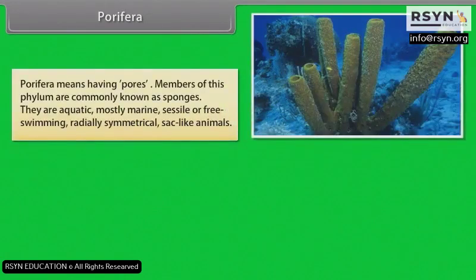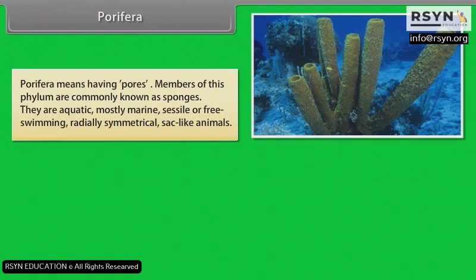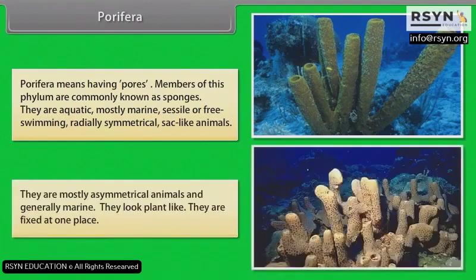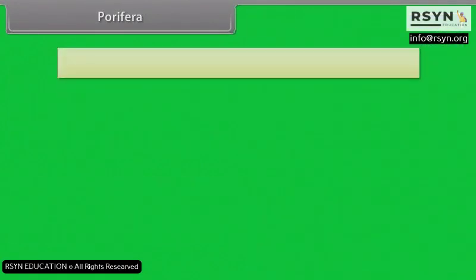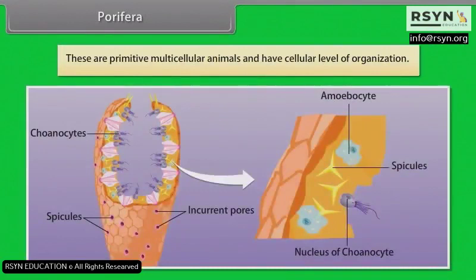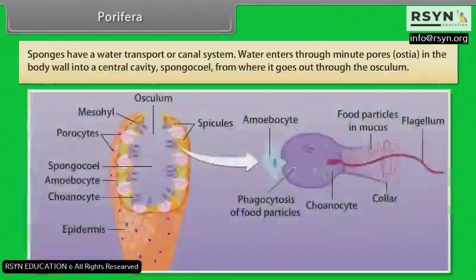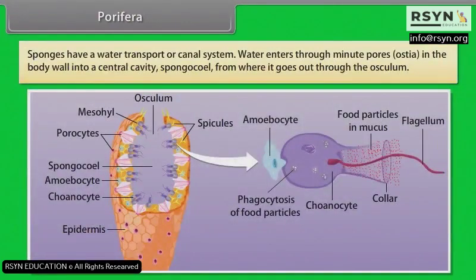Porifera means having pores. Members of this phylum are commonly known as sponges. They are aquatic, mostly marine, sessile or free-swimming, radially symmetrical, sack-like animals. They are mostly asymmetrical animals and generally marine — they look plant-like and are fixed at one place. These are primitive multicellular animals and have cellular level of organization. Sponges have a water transport or canal system.